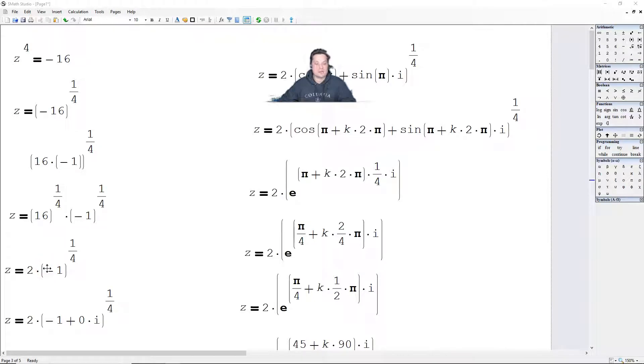Here I'm going to show you how to find z to the 4th equals negative 16, so all of the 4th roots of negative 16.